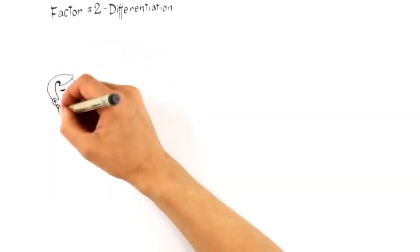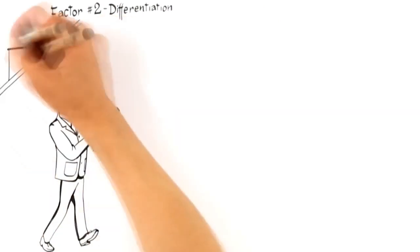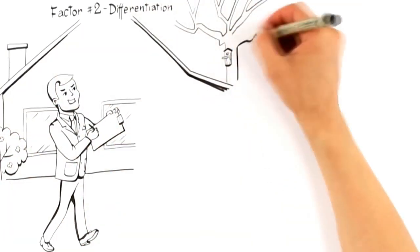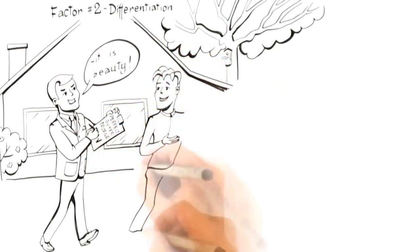This leads us to factor number two, differentiation. To attract the highest possible offer, a home must be positioned to attract buyers who will perceive its highest value. Expert advertisers understand that there is a perfect buyer profile for the buyer that would be willing to pay the most money for your home.